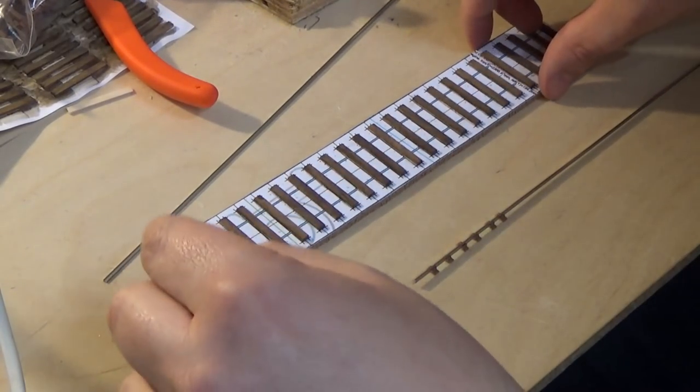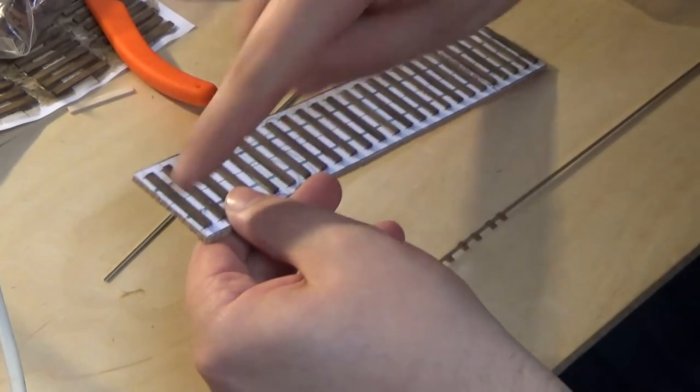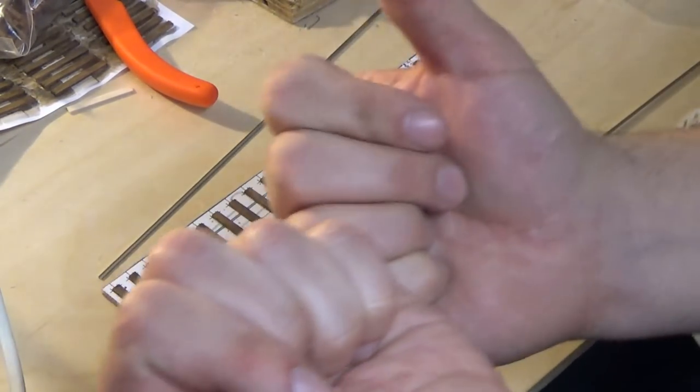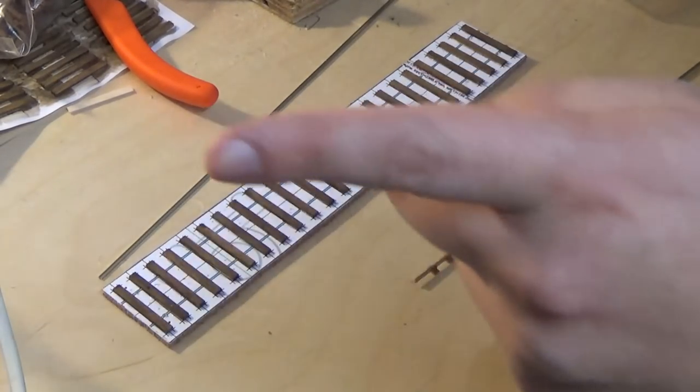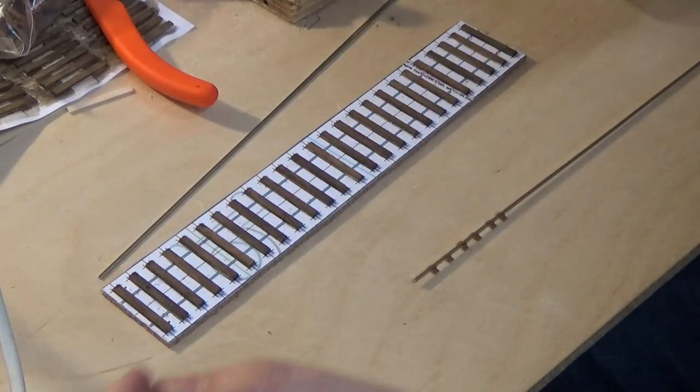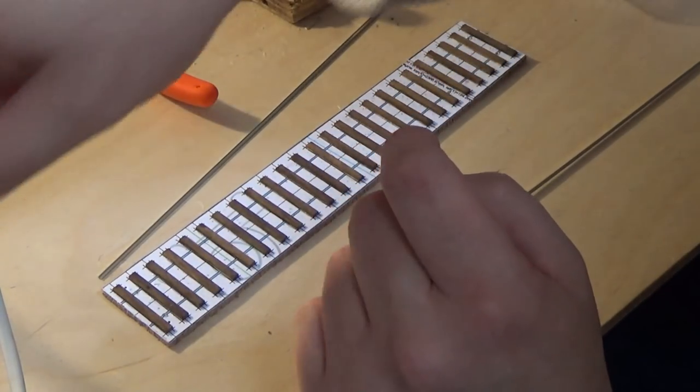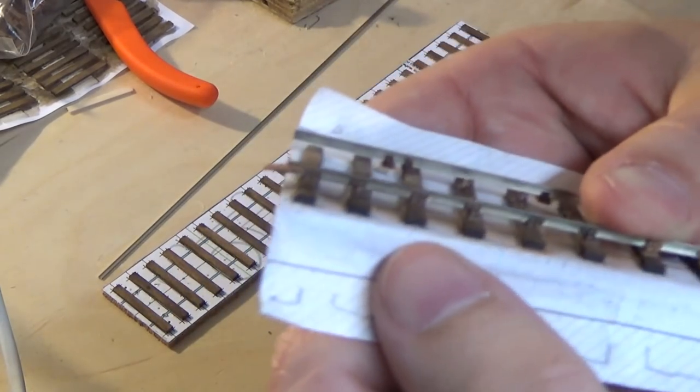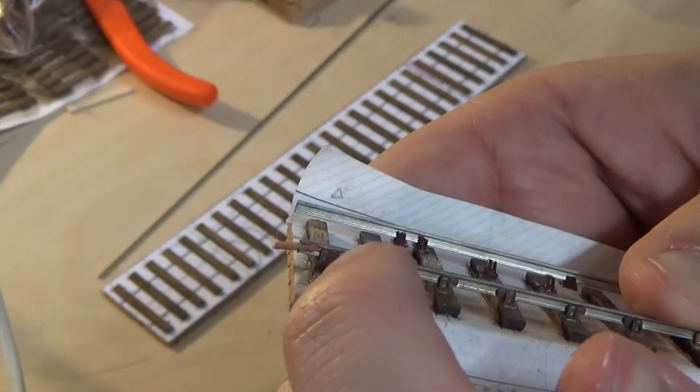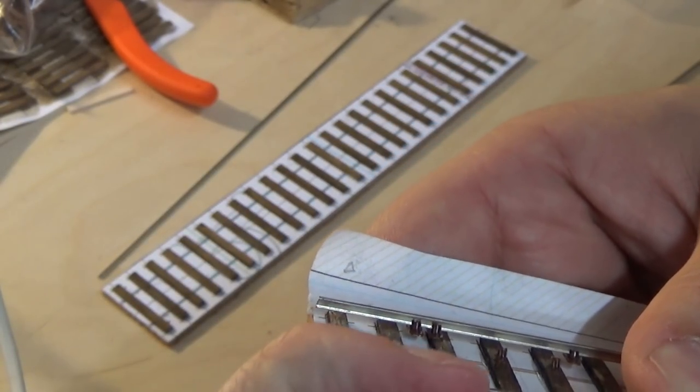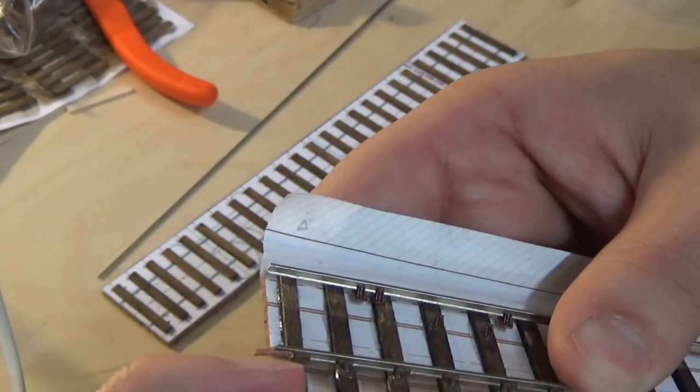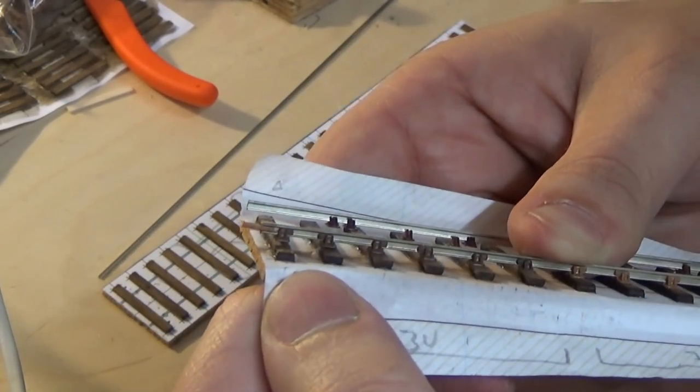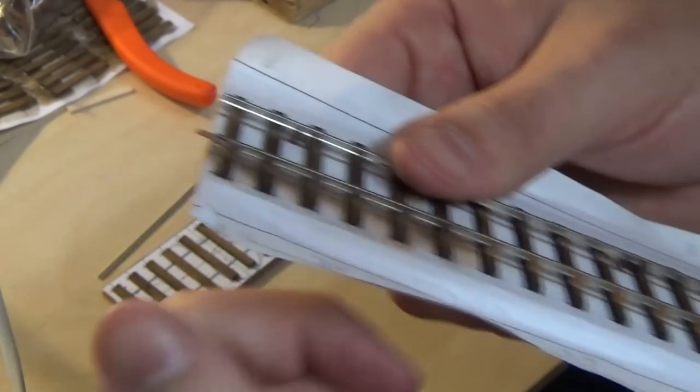One last thing with the chairs - at the end of a section of rail, the chairs would always sort of face opposite. One that way and then one that way, to give enough space for the fish plate sitting. You see that one facing that way, where that one faces that way, so where the two rails join you've got a space for that fish plate there to sort of sit in. That's the other thing to remember with them.